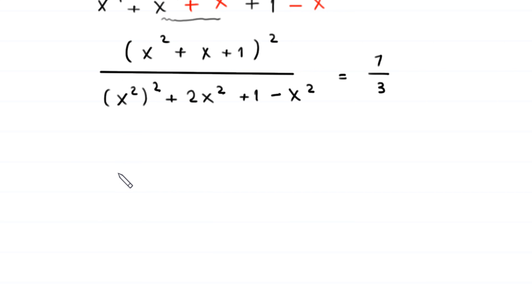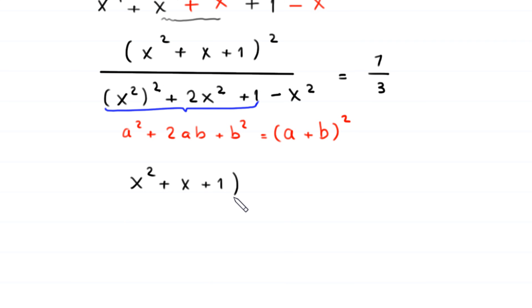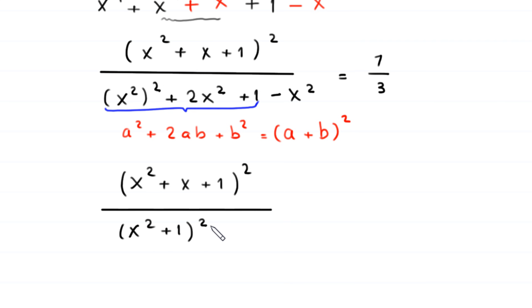Now by using the algebraic identity a² + 2ab + b² = (a + b)², the expression in the denominator — (x²)² + 2x² + 1 — becomes (x² + 1)². So we have (x² + x + 1)² divided by (x² + 1)² − x², equal to 7 over 3.